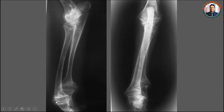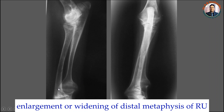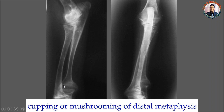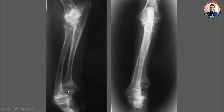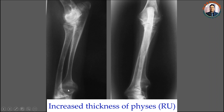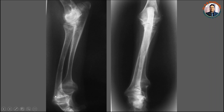There is also a mild bending of the bone. In the radiograph this bending is not very obvious, but this much bending is appreciable clinically. Overall, for the diagnosis of rickets by radiograph, we look for at least four radiographic signs: first, enlargement of the distal metaphysis; second, cupping or mushrooming of the distal metaphysis; third, hazy appearance of the distal metaphysis; and fourth, increased thickness of the physis. Besides these, there may or may not be bending, as well as a decrease in the cortical density or thickness of the cortex.